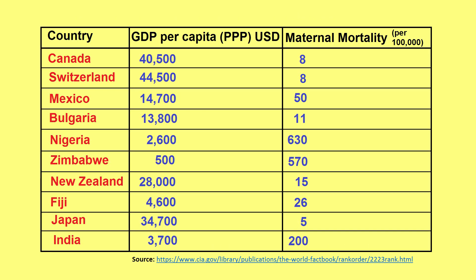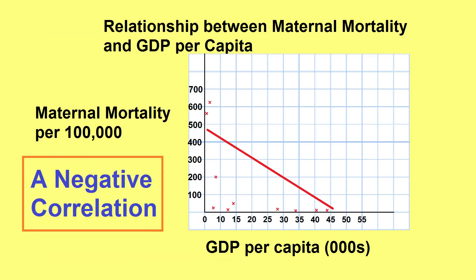Sometimes we get a negative correlation, where the figures on the y-axis get lower as the figures on the x-axis get higher. An example of this would be if we plotted maternal mortality against GDP per capita, as in this example below.